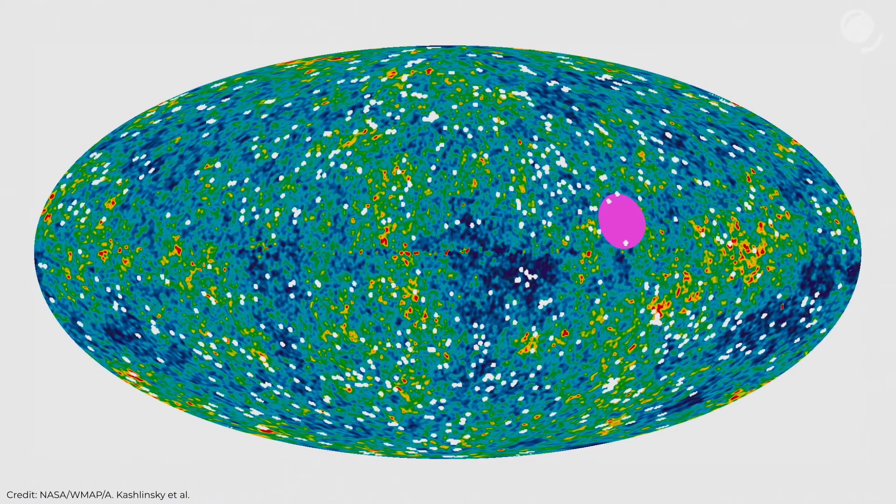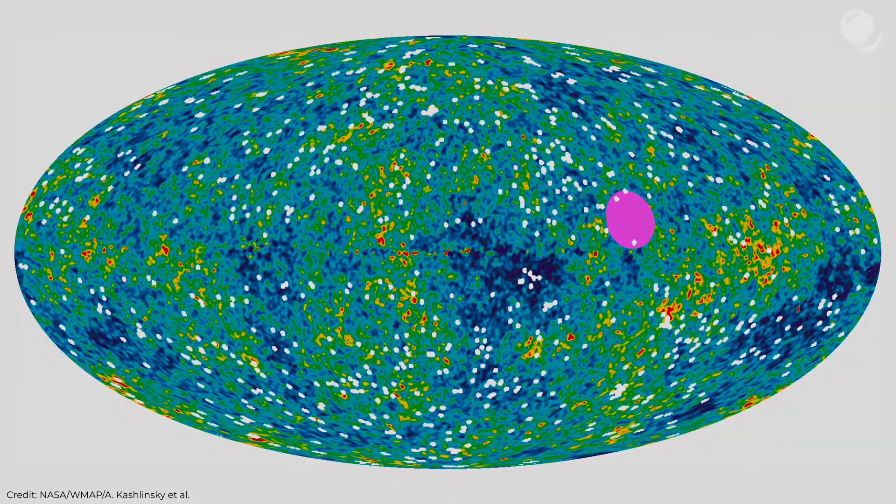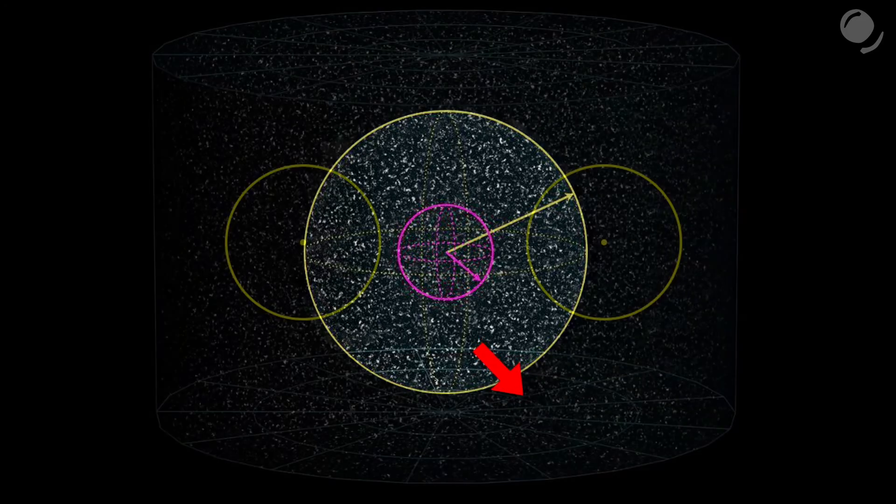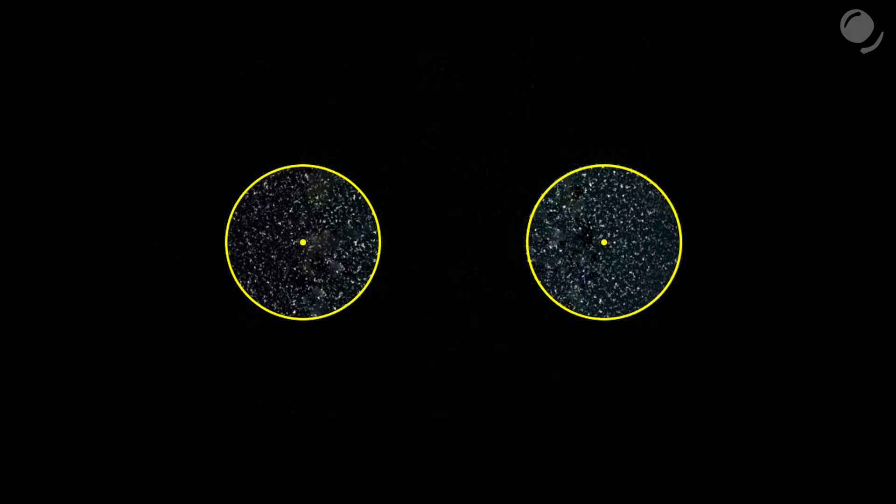But the Dark Flow, if it's real, exists across the whole observable universe. And to explain such a large-scale flow, the point of attraction has to exist outside of the observable universe. And what exactly might that be we cannot possibly know? Some massive structures outside the observable universe? A different universe?